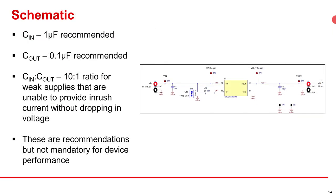For the schematic, we go with the recommended input capacitance of 1 microfarad and output capacitance of 0.1 microfarad. The input to output capacitance ratio recommendation is for weak supplies that can't provide the inrush current without dipping in voltage. So if you have a power limited supply, you may need more input capacitance.